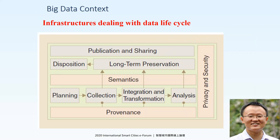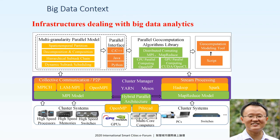Now in the big data context, we need infrastructure dealing with the data life cycle — from data planning, collection, integration, to long-term preservation, publication, and sharing provenance. For big data analysis, we also need new infrastructure which can integrate different parallel processing architectures together, like MapReduce-based, Hadoop, Spark, the traditional thread-based, messaging-based, and process-based OpenMPI.